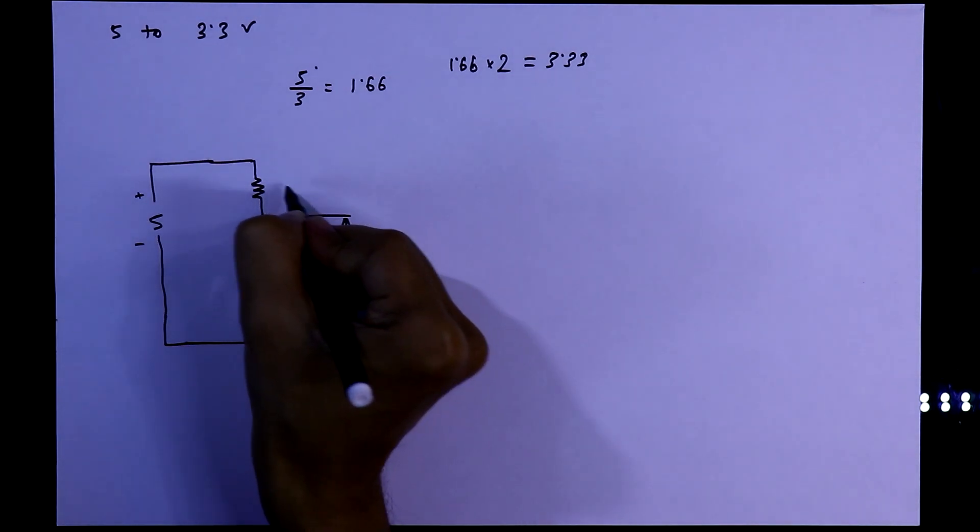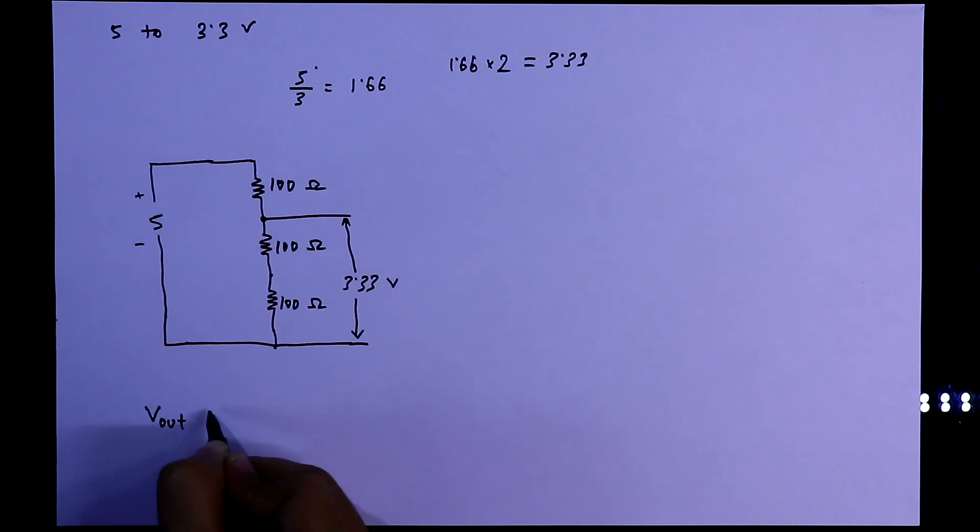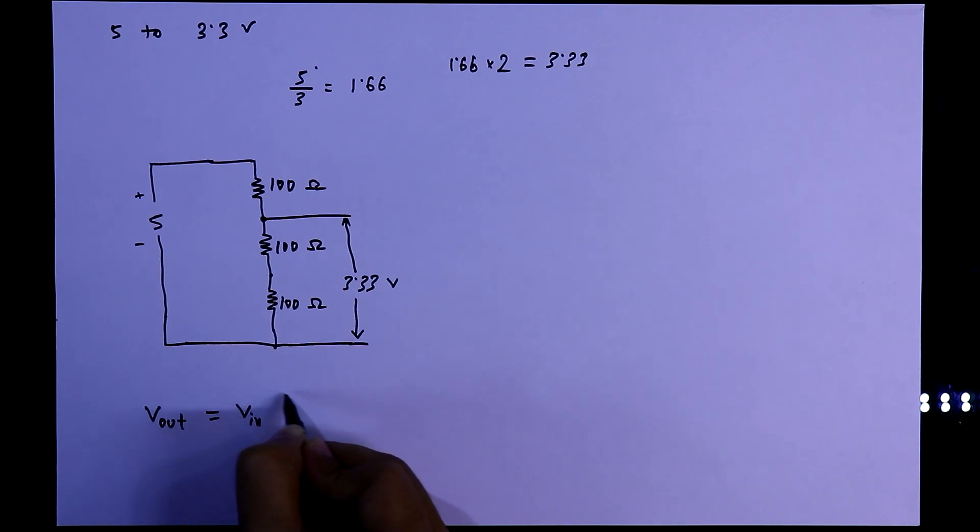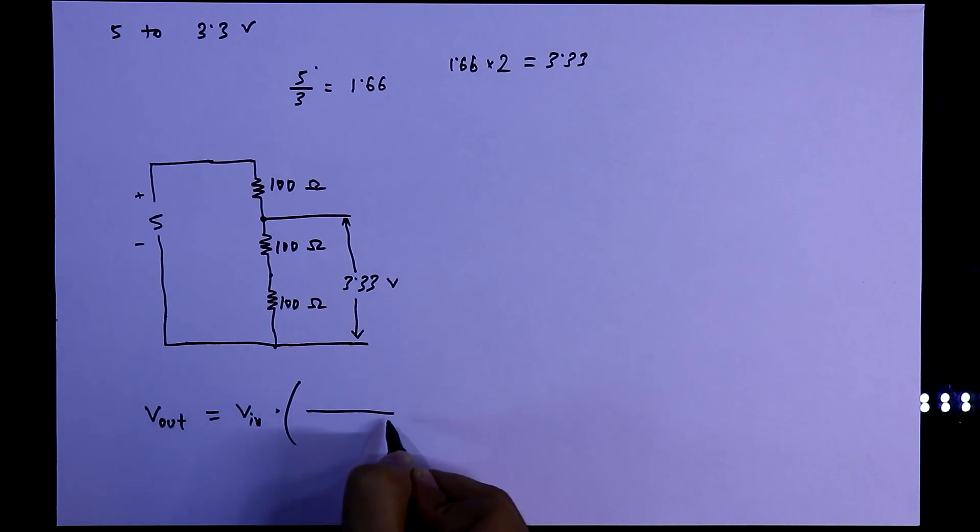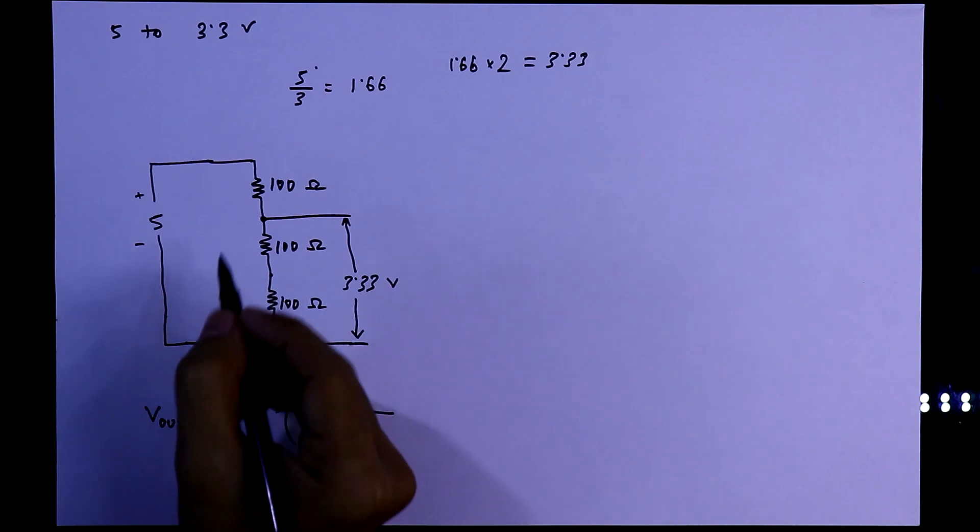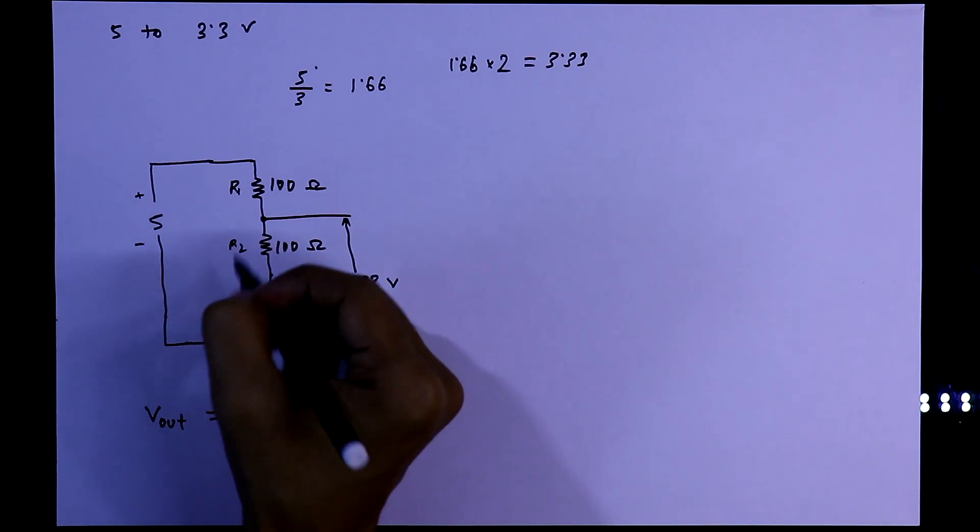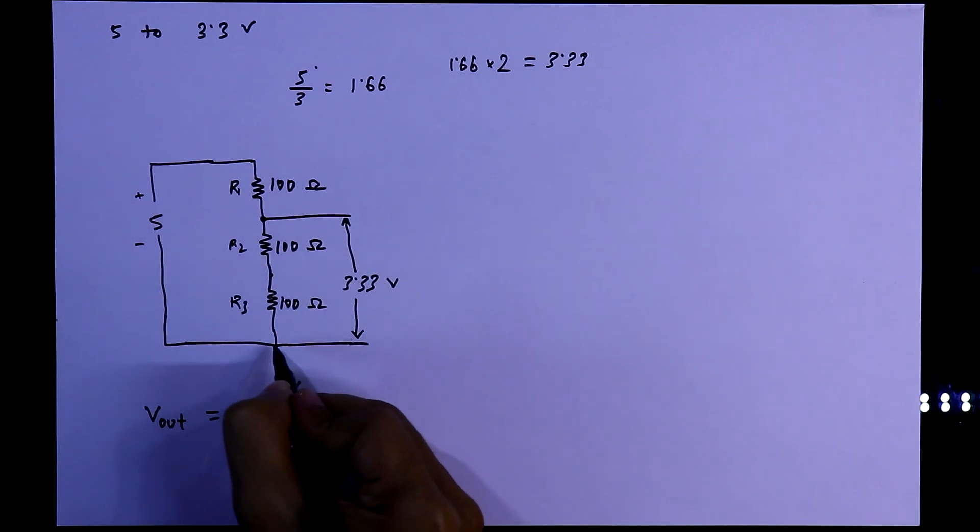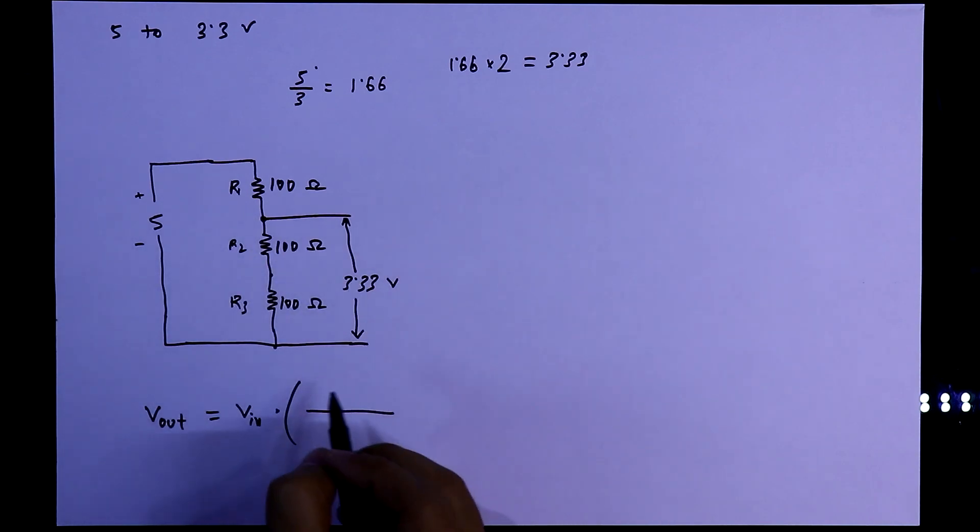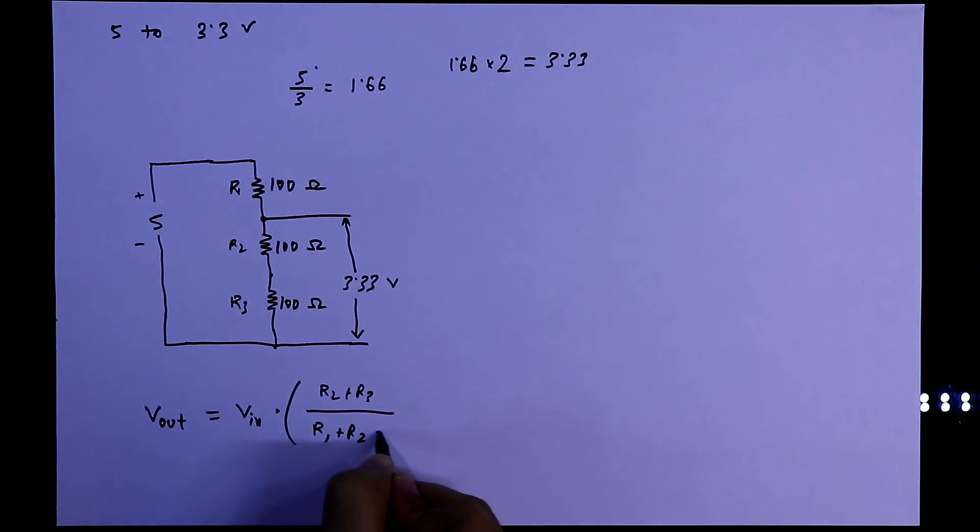If you want to verify this circuit with the equation, let's say I am using 100 ohms resistor. Vout equal to, the equation is, first I will write the equation. Vin multiplied by total resistance from the ground side. As I have said before, it is R1, R2 and it is R3. I am just naming it. So total resistance from the ground up to the point, it is R2 plus R3, divided by total resistance of the circuit, R1 plus R2 plus R3.